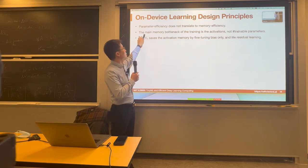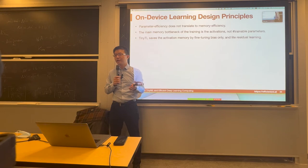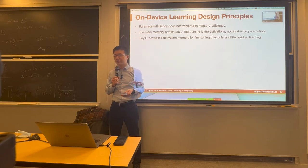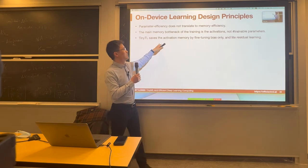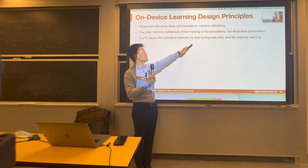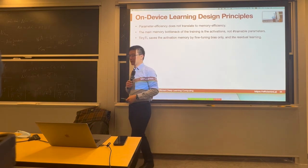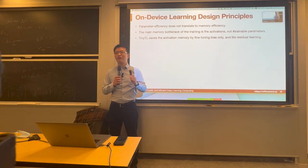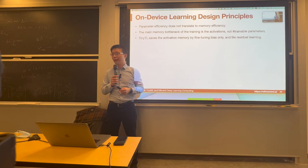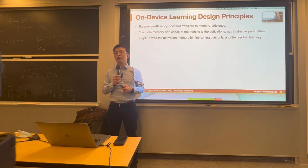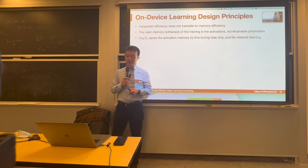In summary, we talked about parameter efficiency versus memory efficiency. Parameter efficiency does not translate to memory efficiency — another dimension to consider is activations. The main memory bottleneck of training is not parameters, but activations. Tiny TL saves activation memory via two ideas: fine-tuning the bias only, and light residual learning. In light residual learning, we target lower activation by using smaller resolution, less channel expansion (expansion ratio of only one), reduced depth — two layers using group-wise convolution plus one-by-one convolution, replacing the conventional one-by-one, three-by-three depthwise, plus one-by-one. Those are the design principles for efficient on-device learning.